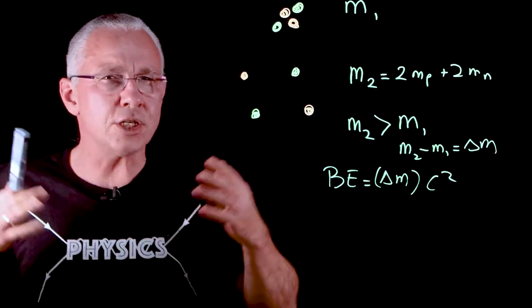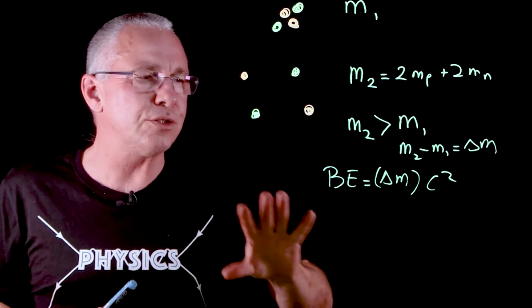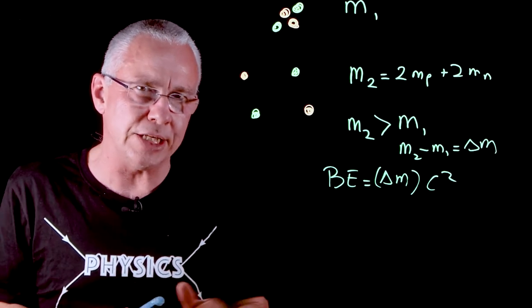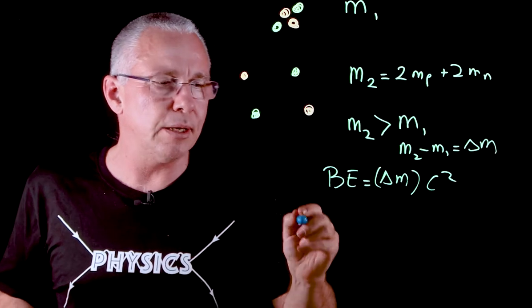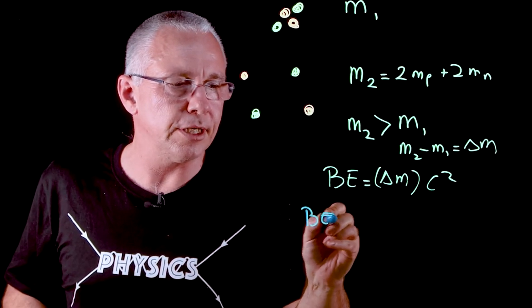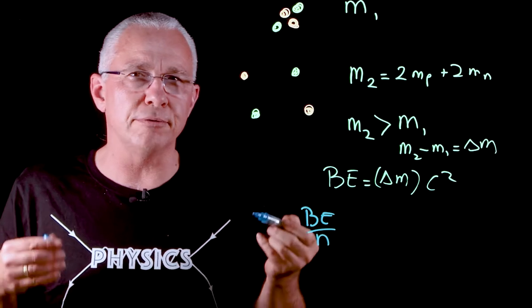So to understand the stability, what we want to do is not work out the binding energy but the binding energy per nucleon. So we divide it by the number of nucleons, and that gives us an understanding of how stable the atom is.